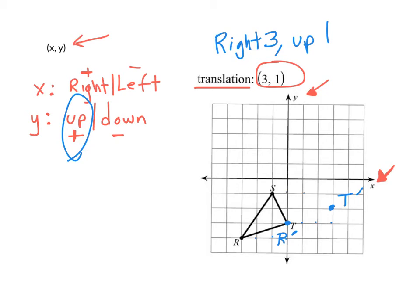And then finally for S, 1, 2, 3, up 1, label that S prime. See if I can do a little bit better without a ruler. It's better than the first one. And there you have it. You can clearly see that this just kind of slid that way. And this was the directions in some math notation there of how to do that.